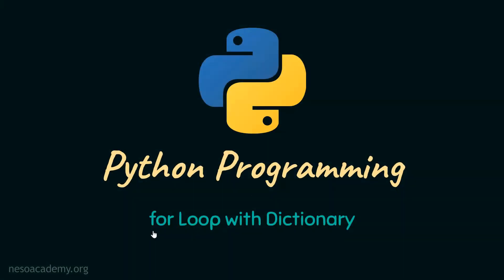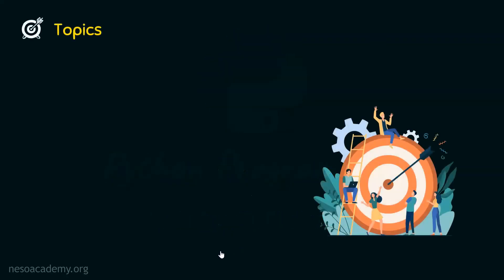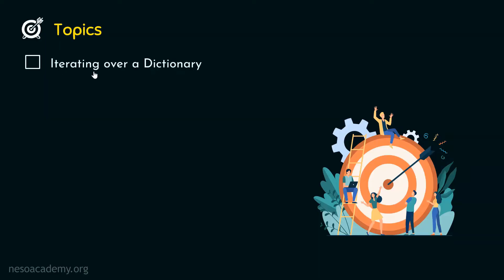In this presentation, we will understand how for loop works with the dictionary. Without any further delay, let's get started. The first topic of this presentation is iterating over a dictionary.